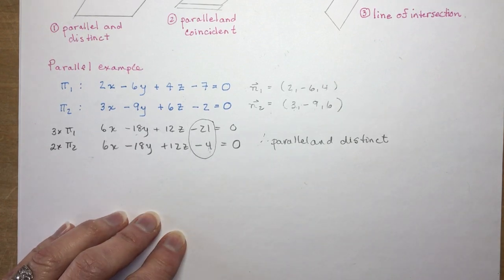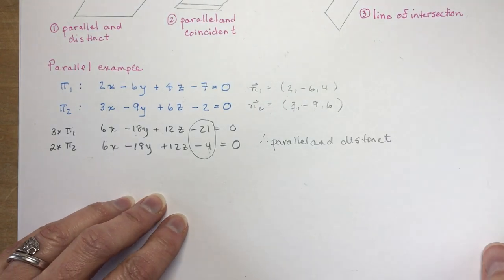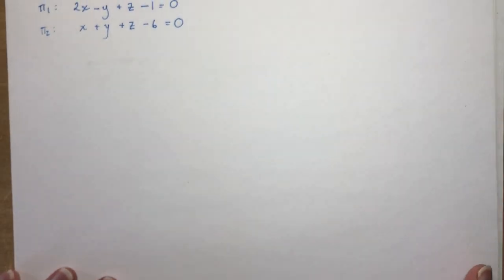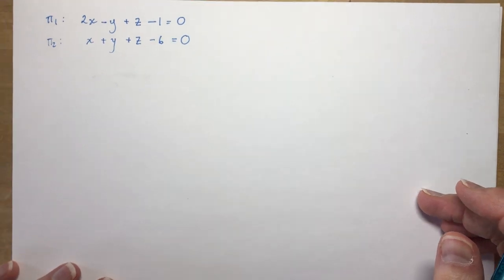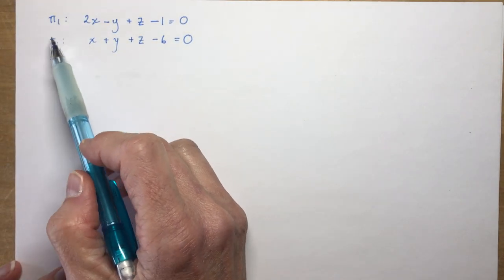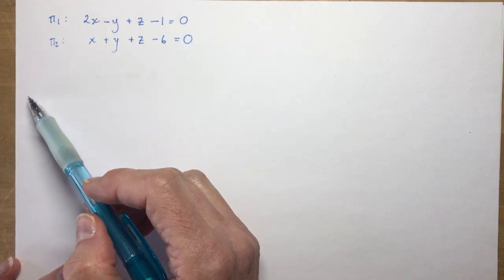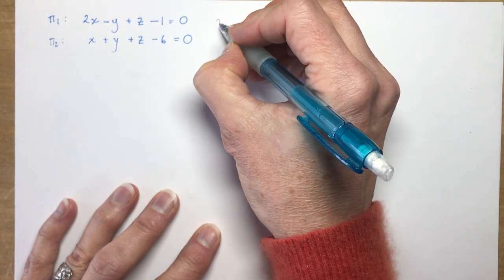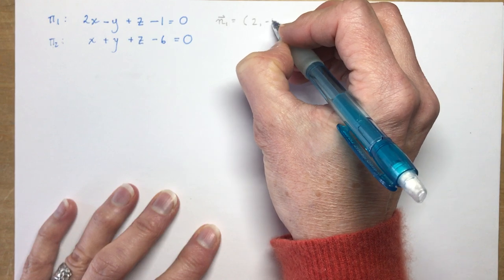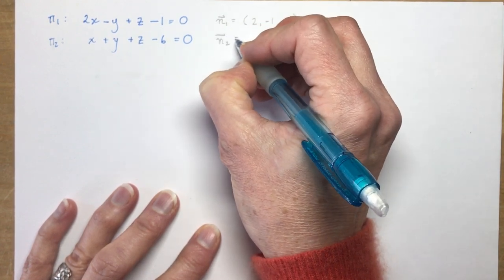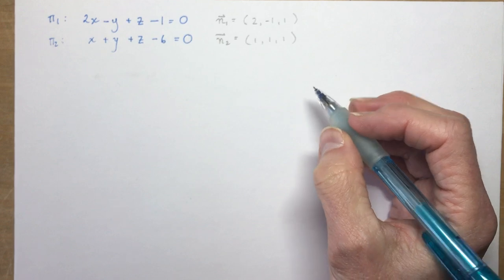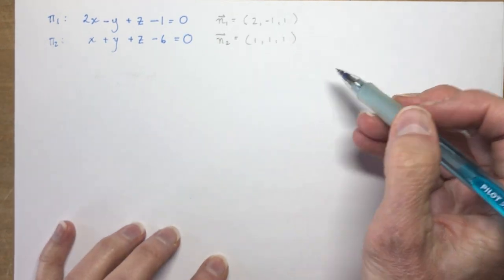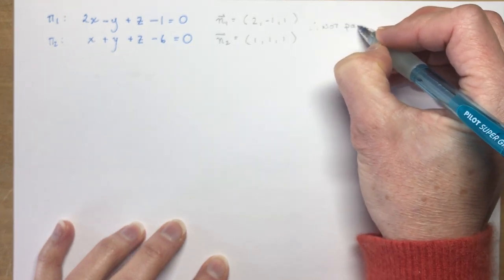Now the second example: how to find the line of intersection. I'm going to show you two ways. We have plane π₁ and π₂. First thing: check the normals. Normal for π₁ is (2, -1, 1) and the normal for π₂ is (1, 1, 1). These are not scalar multiples, so the planes are not parallel and they will intersect as a line.